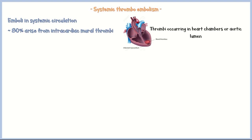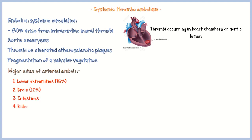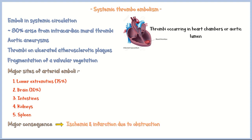Systemic thromboembolism refers to emboli in the systemic circulation. About 80% of them arise from intracardiac mural thrombi — thrombi occurring in heart chambers or the aortic lumen. Others arise from thrombi in aortic aneurysms, ulcerated atherosclerotic plaques, and fragmentation of valvular vegetations. Major sites of arterial emboli are the lower extremities and brain, with involvement of the intestines, kidneys, and spleen to a lesser extent. In contrast to pulmonary embolism, the major consequence of arterial embolism is ischemia and infarction due to obstruction of blood vessels.